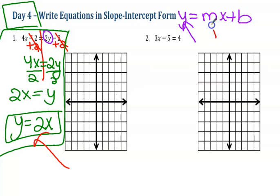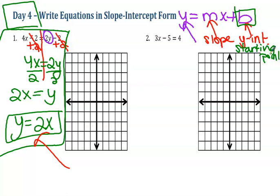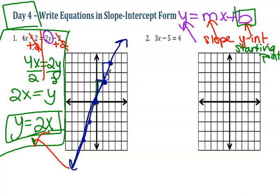My m is my slope and my b is my y-intercept — I call this my starting point, where it starts on the graph. For example, if you started with a certain amount of money and made a certain amount every hour, how much did you start with? For this one I don't have a number, so I start at zero. My slope is up two and over one — there's an invisible one on the bottom. Up two, right one — up two, right one — because it's a positive slope, so it goes uphill from left to right.